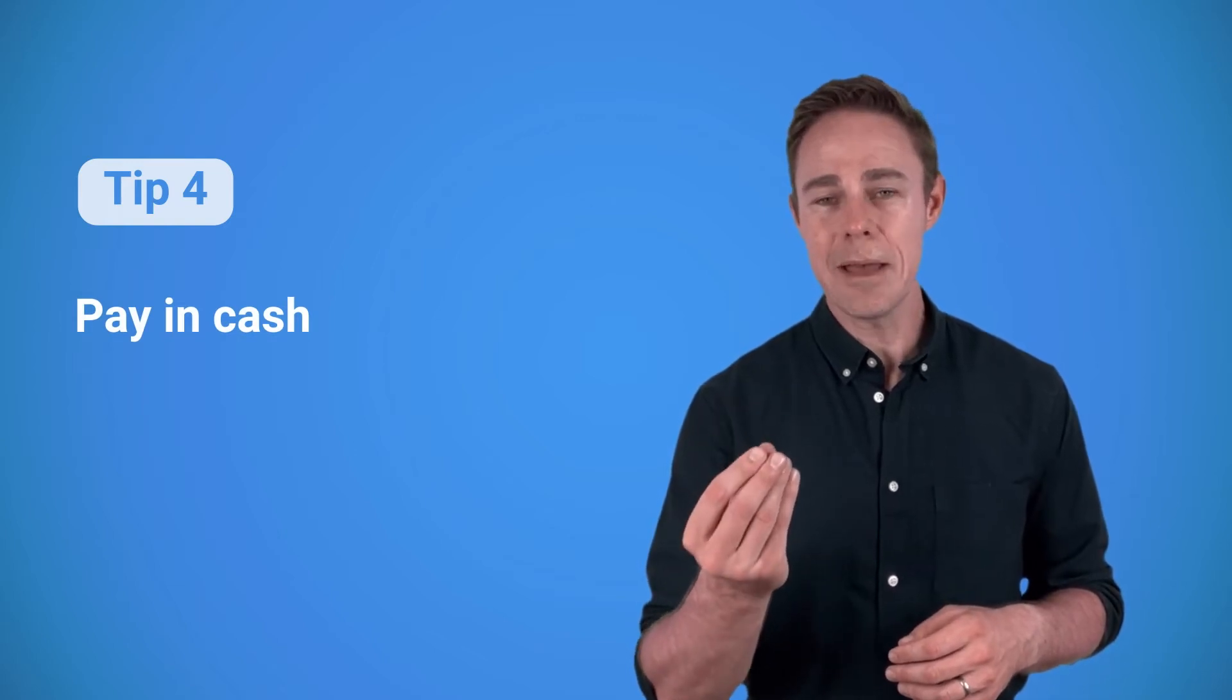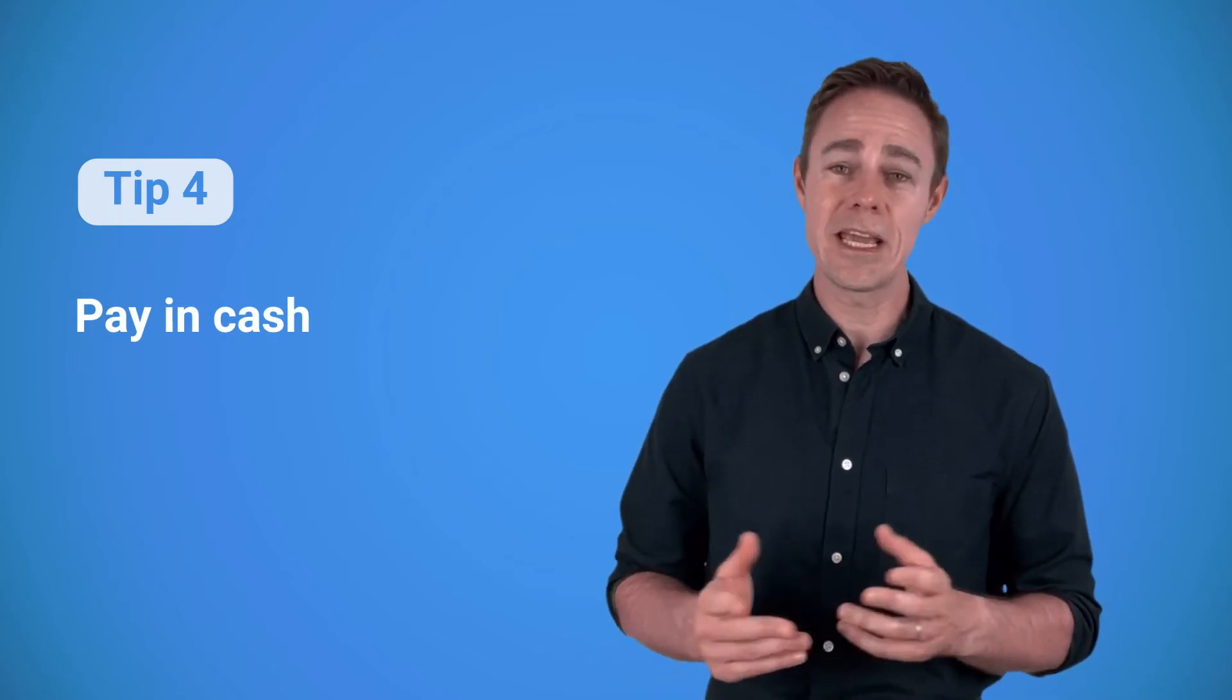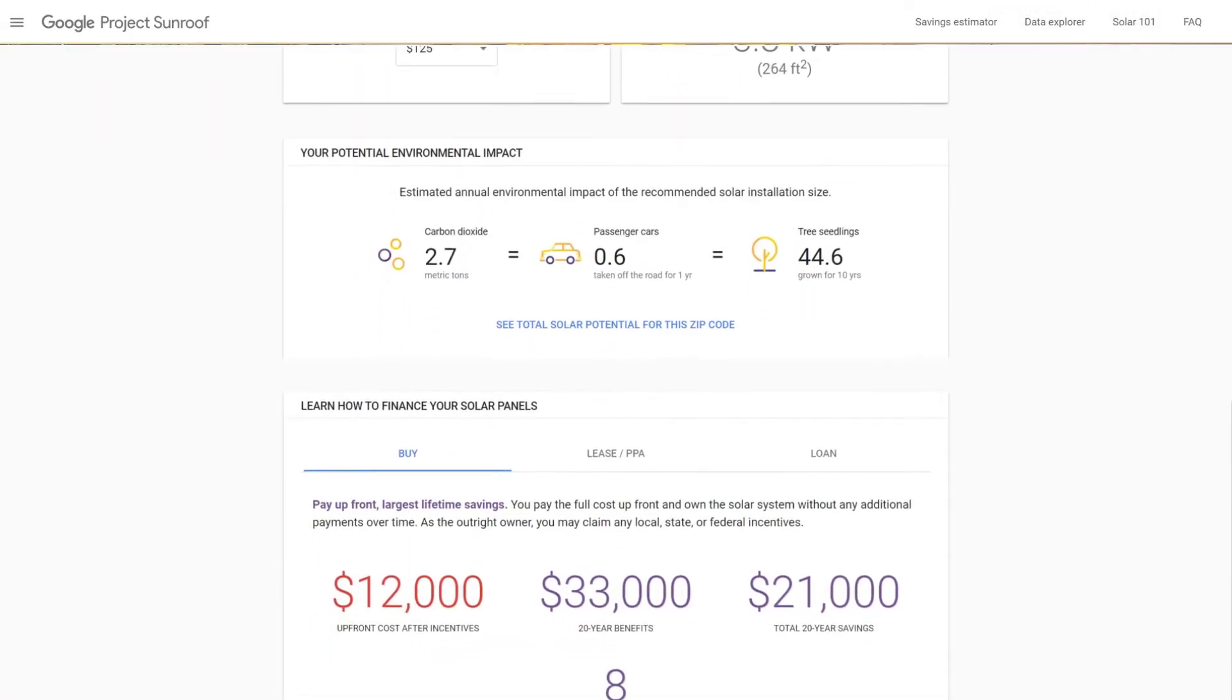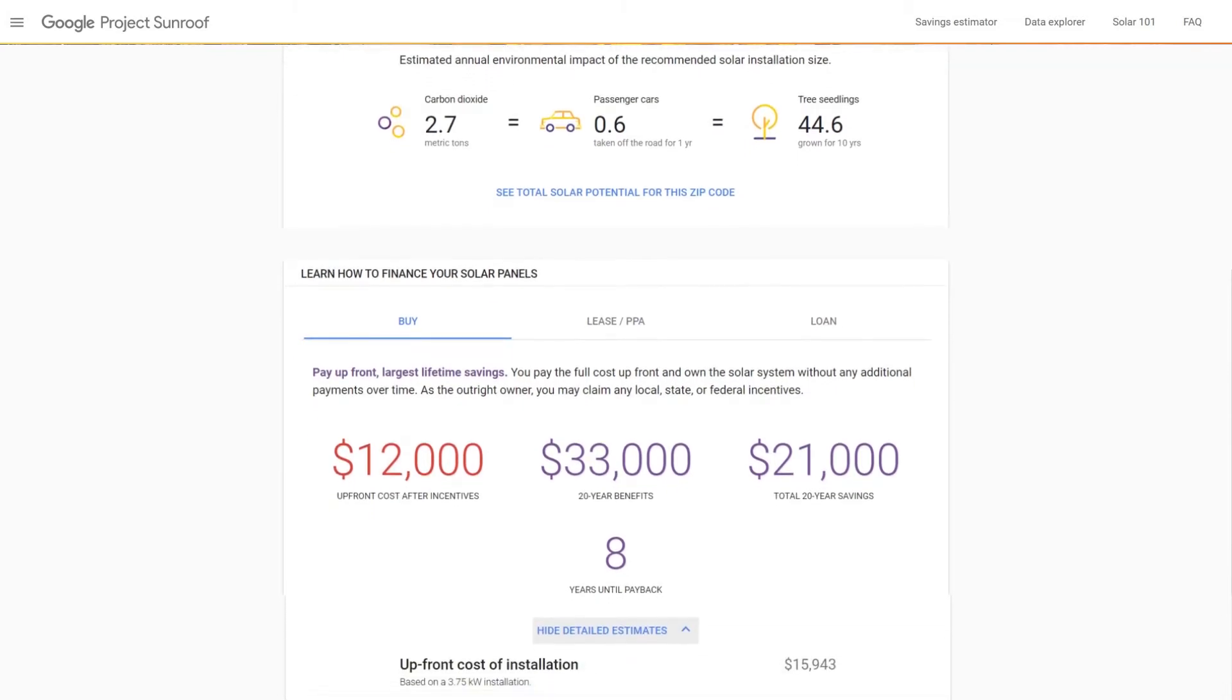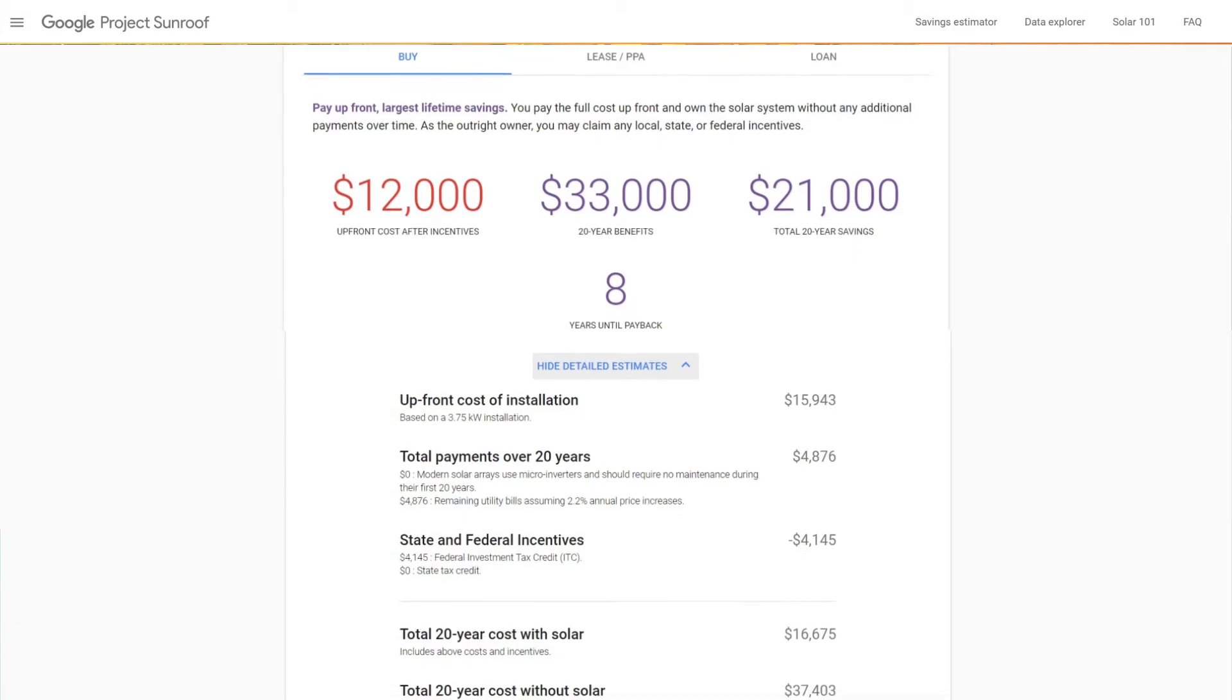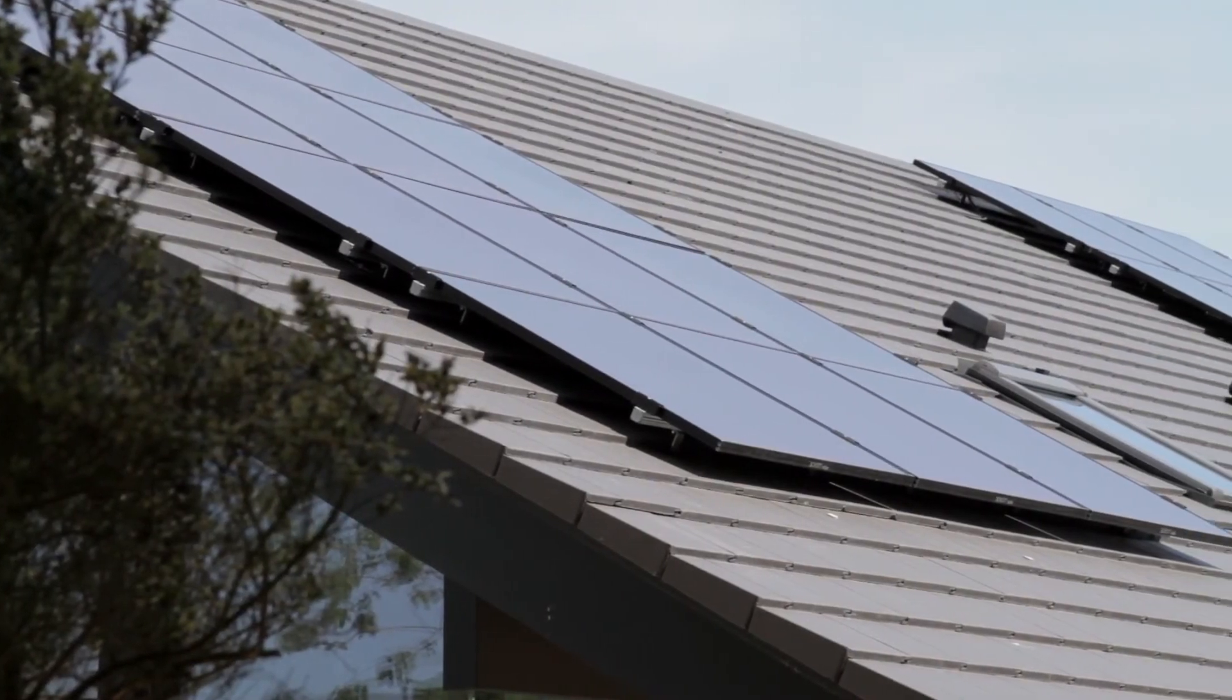Moving on, tip number four, pay in cash. Look, it can be tempting to lease a solar system or take a loan for it. However, in the long run, monthly payments you'll have to make burn all the profit that a solar system generates. The experts from Google Project Sunroof calculated that a 4 kilowatt solar system in Berkeley can bring from $30,000 to $50,000 over its lifetime. The upfront cost of this system is somewhere around $10,000 if you pay in cash.